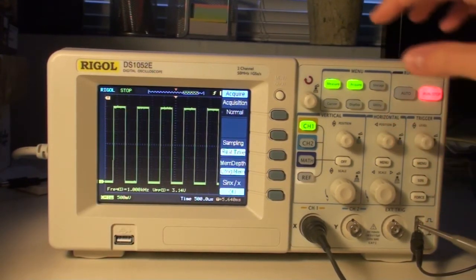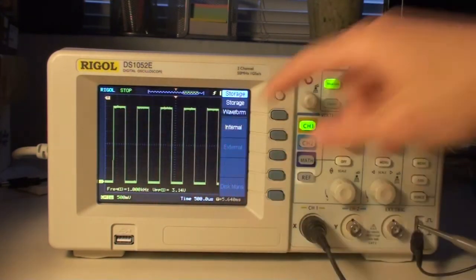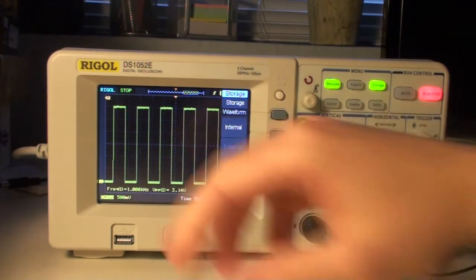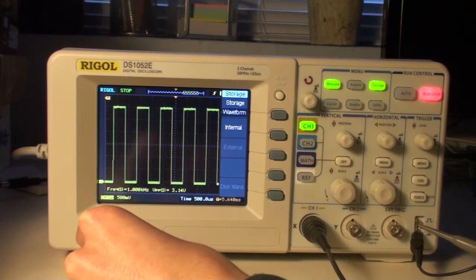Okay, now if we go to storage, we can also store these waveforms on a USB stick for example. This is great if you want to upload files or just save the readings on your computer. Those readings can be saved both as Excel, as comma-separated files, or as normal bitmap files. But let's try to plug in a USB stick down here.